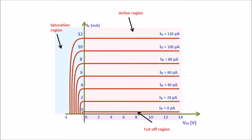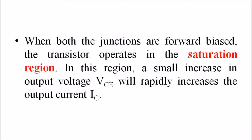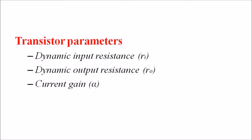When the output voltage is reduced to a small value of about 0.2V, the collector-base junction becomes forward biased. This is because VCE has less effect on the collector-base junction than VBE. Since the emitter-base junction is already forward biased, when both junctions are forward biased the transistor operates in the saturation region. In this region, a small increase in output voltage will rapidly increase the output current IC.